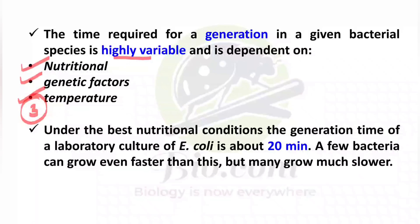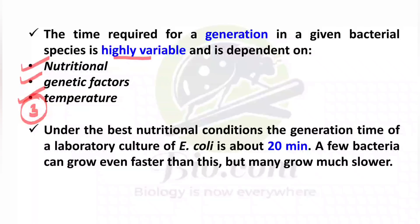The nutrient supply given to bacteria affects growth. If there is an optimal nutrient balance, it will grow faster. If nutrients are deprived, it will not grow faster and the generation time will be longer. Apart from that, genetic factors are also responsible for bacterial growth, and the ambient temperature is required to increase population size. All three factors determine how much time will be in the generation period and how long it takes to replicate into two new cells.